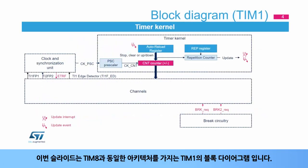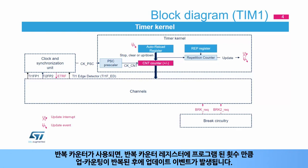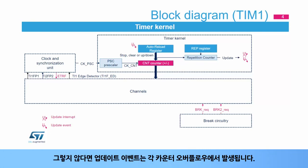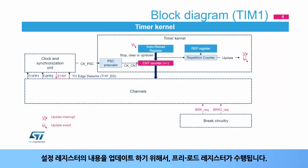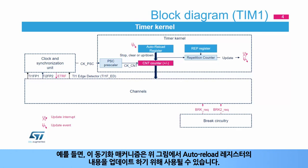This slide presents the block diagram of the TIM1 timer, which has the same architecture as TIM8. The timer kernel consists of a 16-bit up-down counter coupled with an auto-reload register for programming the counting period. If the repetition counter is used, the update event is generated after up-counting is repeated for the number of times programmed in the repetition counter register. Otherwise, the update event is generated at each counter overflow. A preload register is implemented to update the contents of configuration registers, with its content transferred into the shadow register permanently or at each update event.